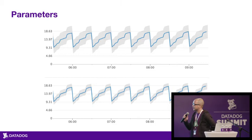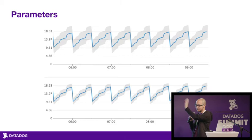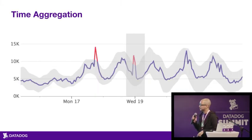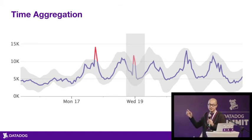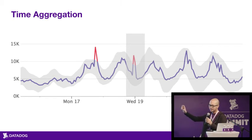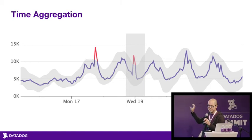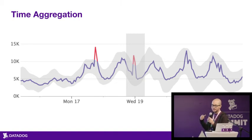We chose to define anomalies by drawing a band and calling anything outside of the band an anomaly. The reason is that it's really clear visually — you know what's an anomaly, it's anything outside the band. On top of that, you also know what the algorithm considers normal behavior, because the band says if the metric is between this value and that value, it's probably fine. There is a consequence, though, which is that this definition plays very strangely with time aggregation.